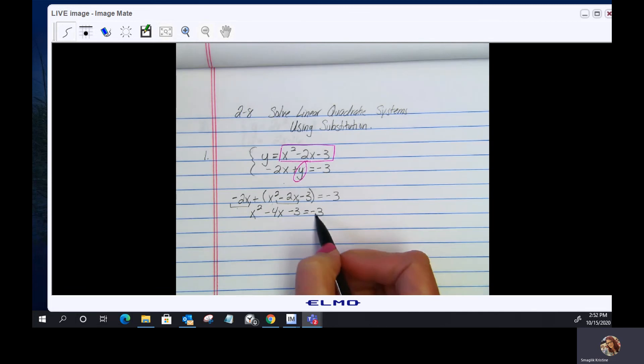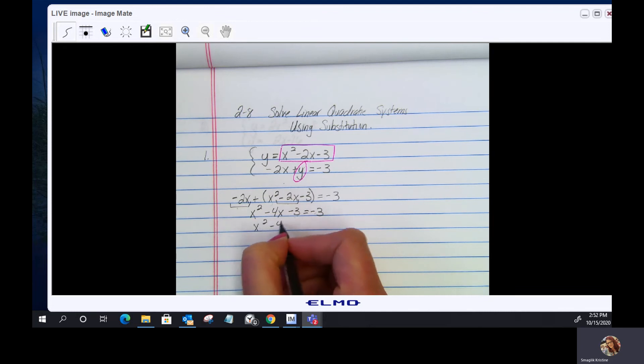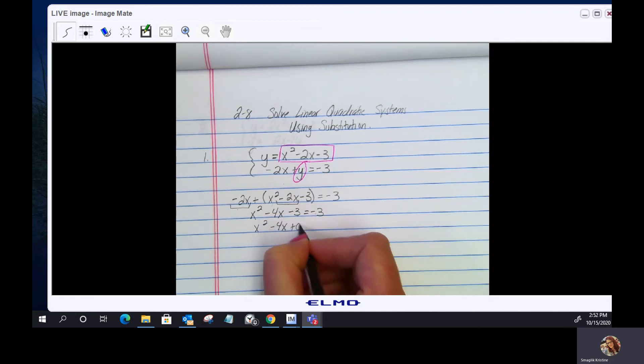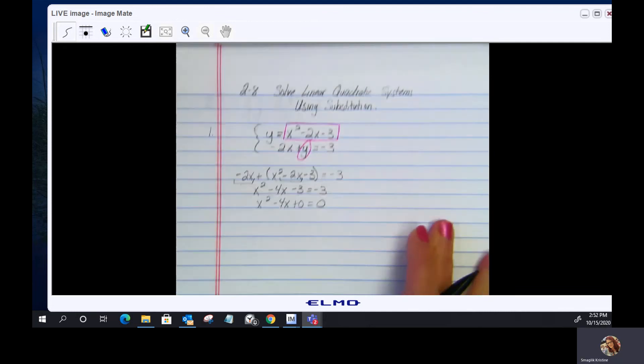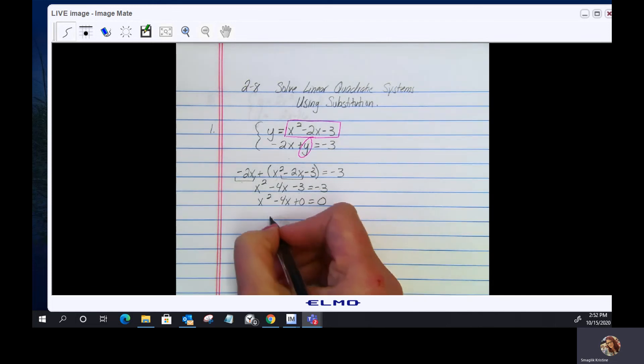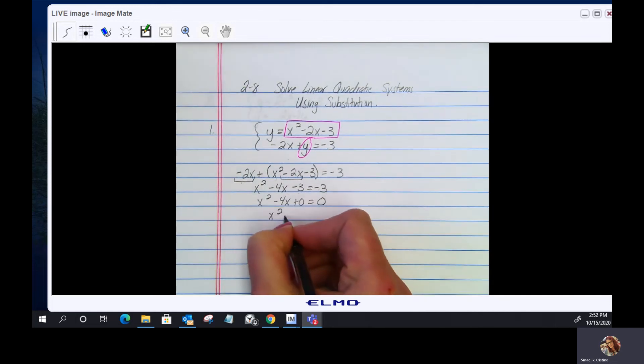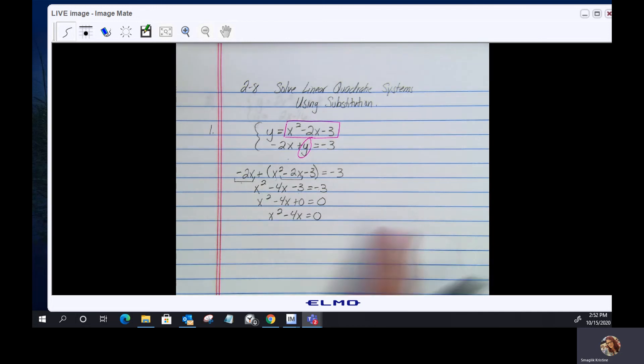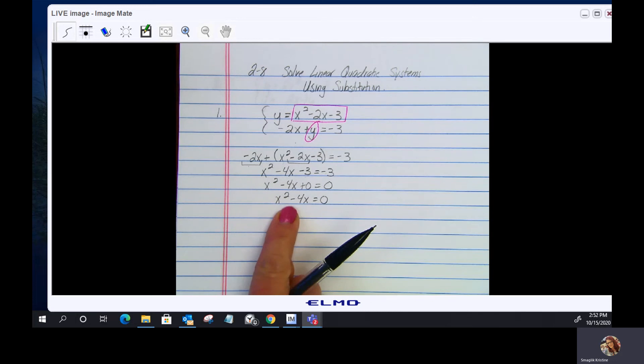Now, if I add 3 to both sides, I'm going to get x squared minus 4x plus 0. Well, I don't need that 0 there. I have x squared minus 4x equals 0. So I can just factor this, factor out a GCF and I'm going to be 0. I can factor out an x.